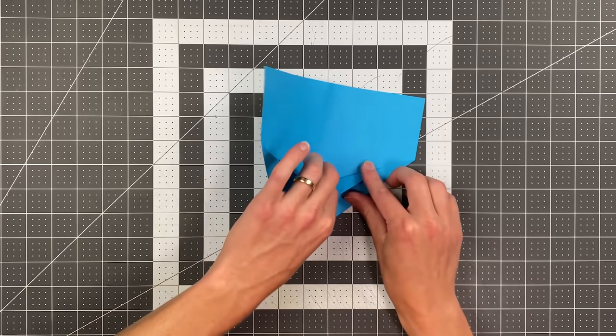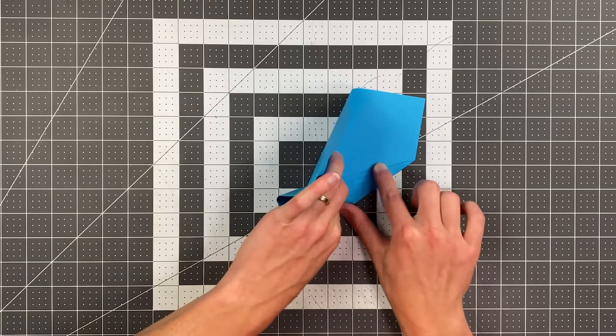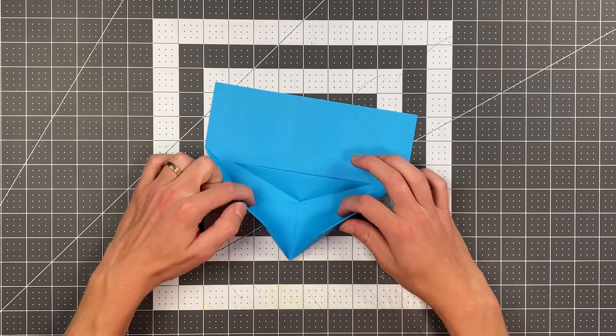Once I do one side I can go ahead and just pull that open in the other direction and do the same thing. Now you can see we have those converging creases.